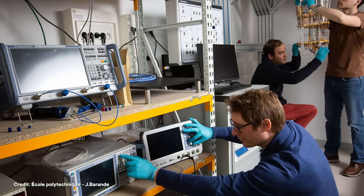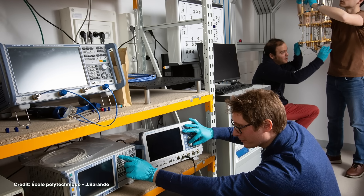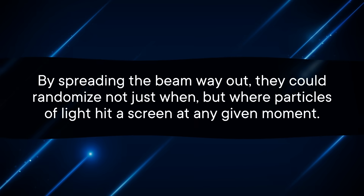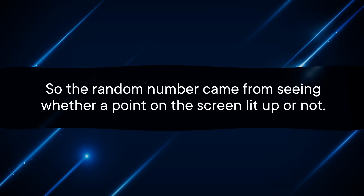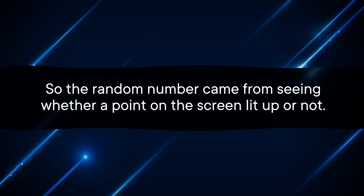Like many other quantum RNGs, this one uses the quantum nature of light. That's because in modern labs, it's easy to quickly and reliably produce light in controlled quantum states, like our quantum coin toss from earlier. Lasers emit individual particles of light using quantum processes, so it's impossible to predict exactly when a single particle will be emitted. The team had the innovative idea to make their laser highly diffuse. By spreading the beam way out, they could randomize not just when, but where particles of light hit a screen at any given moment. The random number came from seeing whether a point on the screen lit up or not. The team had advanced light detectors that could record random flashes all over the screen at basically a trillion frames per second.